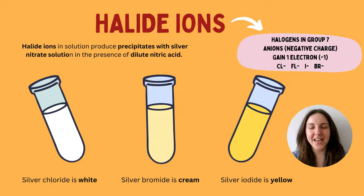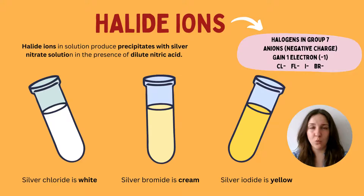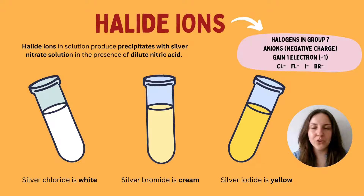Now let's talk about halide ions. A halide ion comes from any element in the halogen group — Group 7 — which includes chlorine, fluorine, iodine, and bromine. These non-metals form ions by accepting one electron, giving them a full outer shell of eight valence electrons.